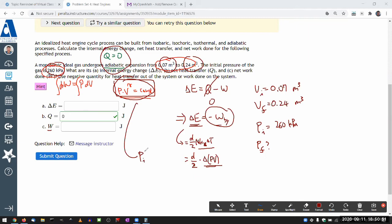So P initial, V initial raised to gamma is equal to P final, V final raised to gamma. So for P final, P final is P initial times the ratio of the two volumes raised to power gamma.